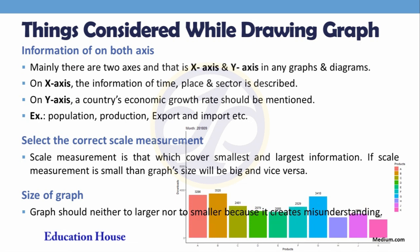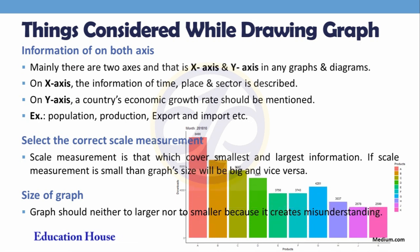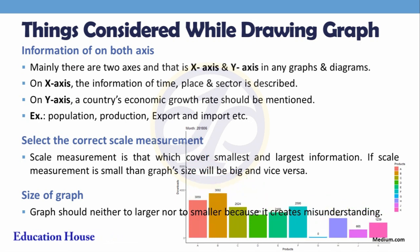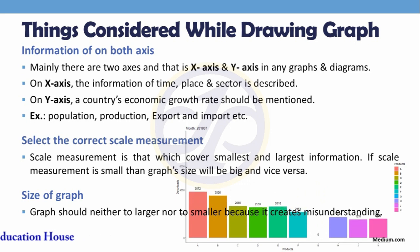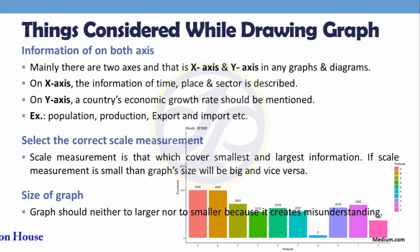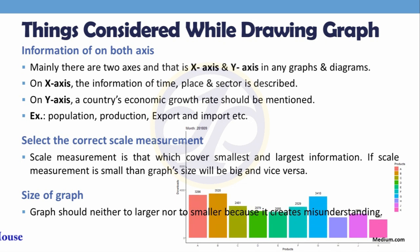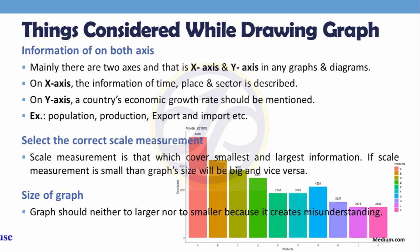Things to consider while drawing a graph: information should be placed on both axes. There are two types of axes on a graph or diagram — the x-axis and the y-axis. On the x-axis, time, place, and sector are described.